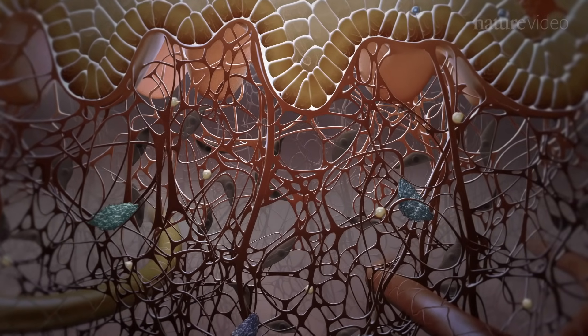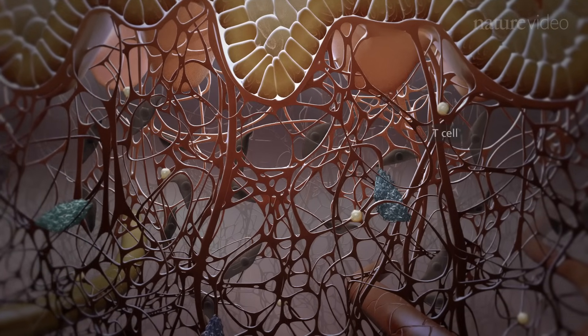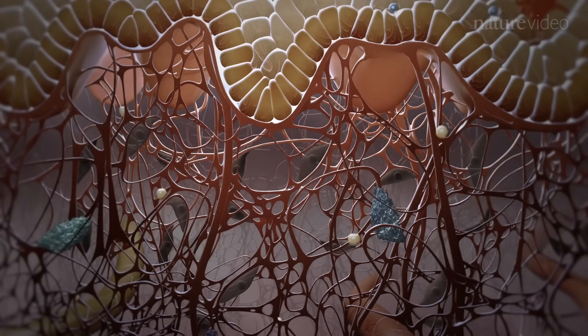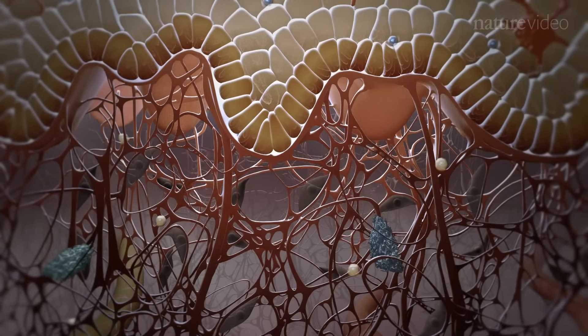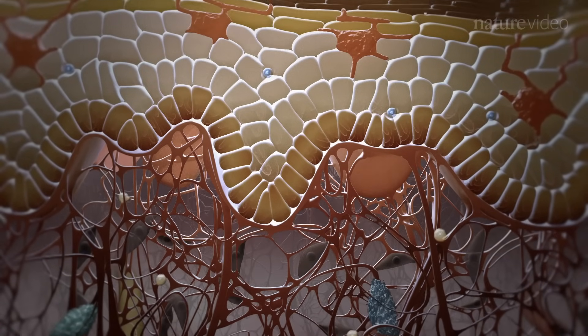If dendritic cells are the immune sentinels, T-cells are the immune effectors. Healthy skin contains more than twice the number of T-cells found in the blood. Most of them are memory T-cells that have previously encountered antigen and can be rapidly reactivated.